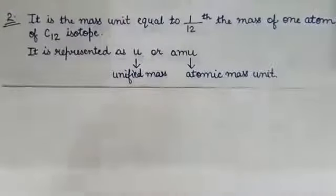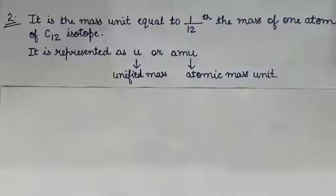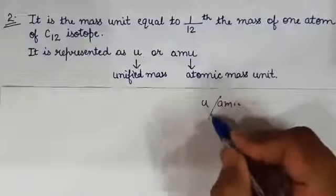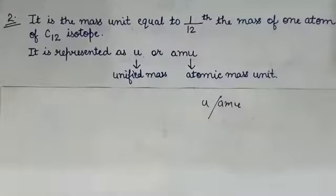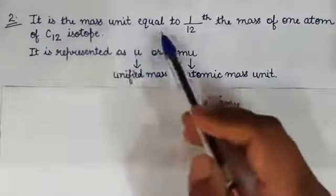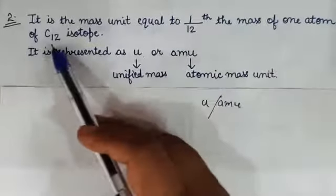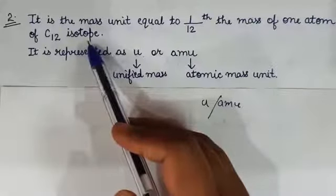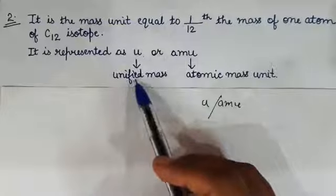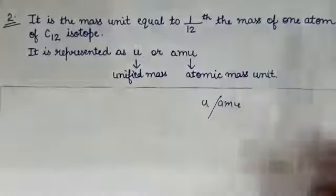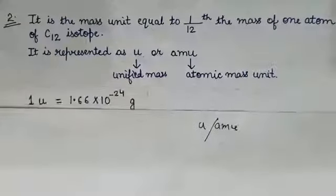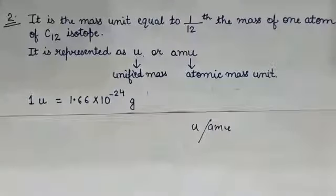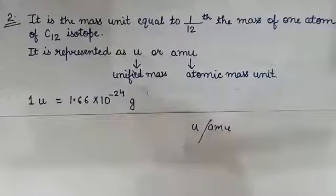Coming to question number 2: What is U or AMU, and 1U is equal to how many grams? U and AMU are one and the same thing — atomic mass unit. It is a mass unit equal to 1/12th the mass of one atom of carbon-12 isotope. This is represented as U (unified mass) or AMU (atomic mass unit). One U is equal to 1.66 × 10⁻²⁴ gram. You can note it down.